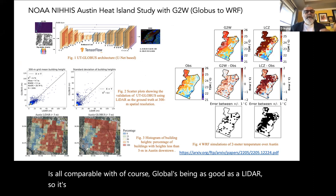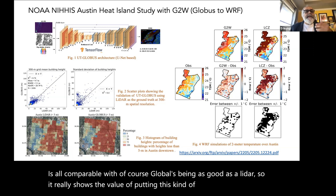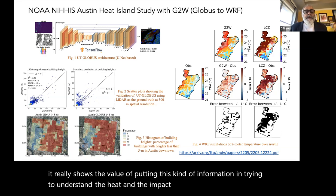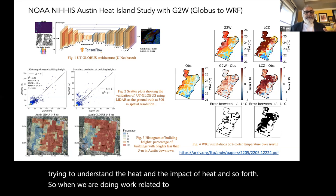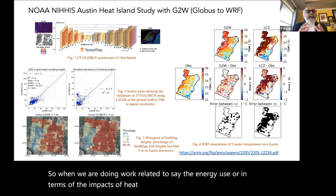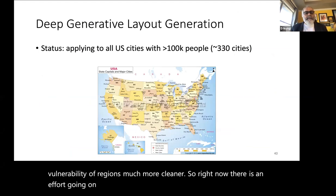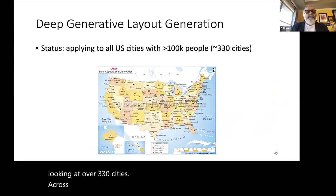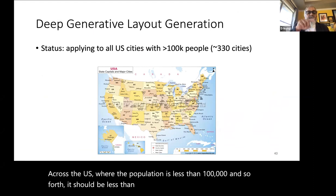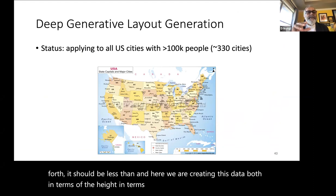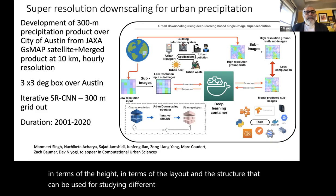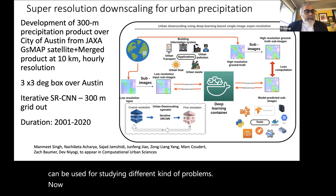This shows the value of putting this kind of information into understanding heat and its impacts. There is now an effort between our lab and Aliaga's group looking at over 330 US cities with populations under 100,000, creating data on building height, layout, and structure that can be used for studying different problems. This represents the opportunity for the last 10 minutes, where I'll shift to a different area of work.